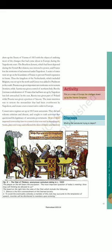Plot on a map of Europe the changes drawn up by the Vienna Congress. Activity. Fig. 6: The club of thinkers, anonymous caricature dating to c. 1820. The plaque on the left bears the inscription: 'The most important question of today's meeting: how long will thinking be allowed to us?' The board on the right lists the rules of the club which include the following: 1. Silence is the first commandment of this learned society. 2. To avoid the eventuality whereby a member of this club may succumb to the temptation of speech, muzzles will be distributed to members upon entering. What is the caricaturist trying to depict? Discuss.